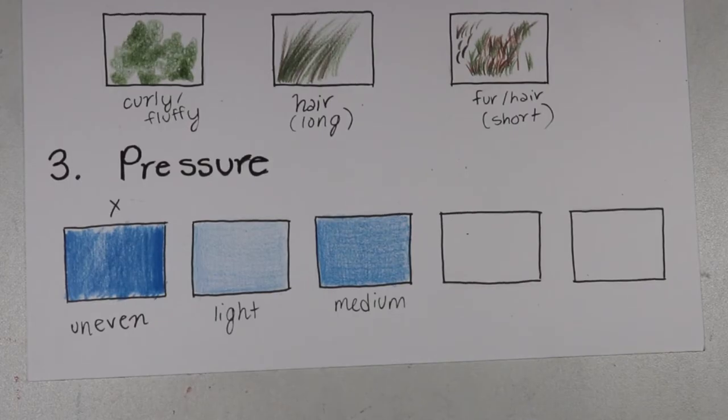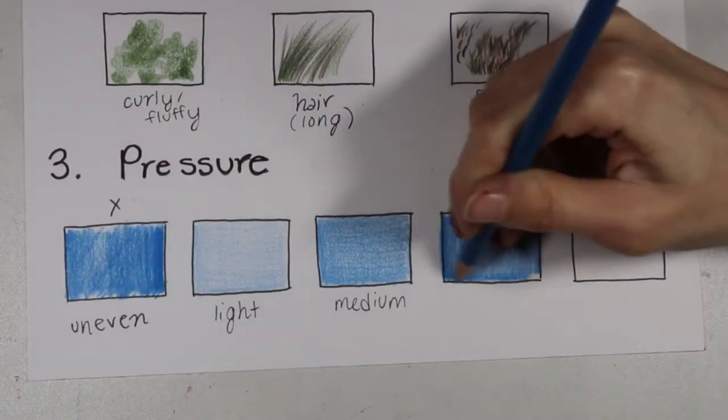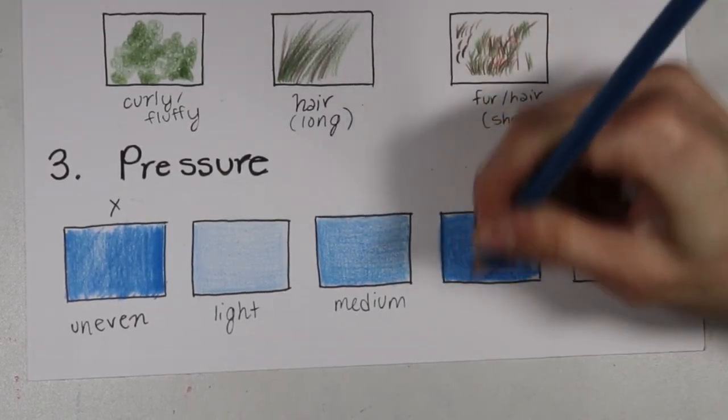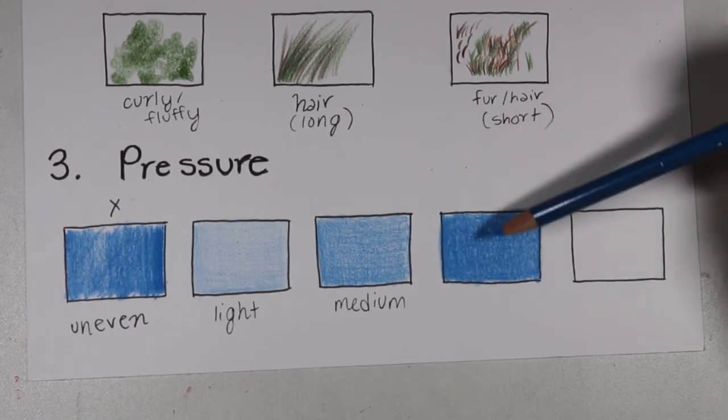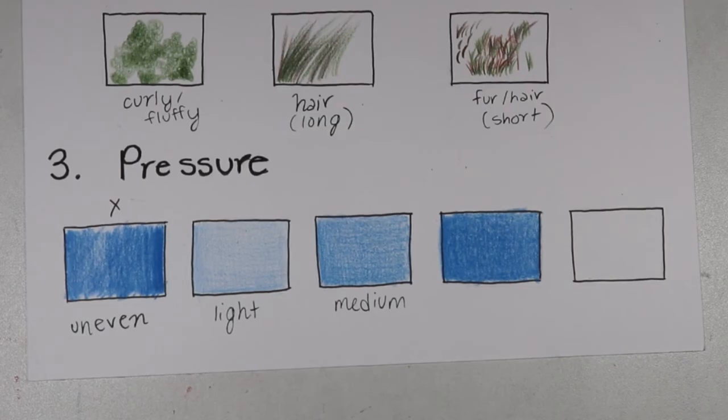Now let's go ahead and do hard pressure. So this is how you're going to get the brightest sort of pigment out of the color that you're using. And this is good for areas that are especially dark or bright.